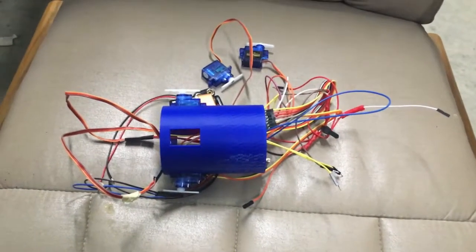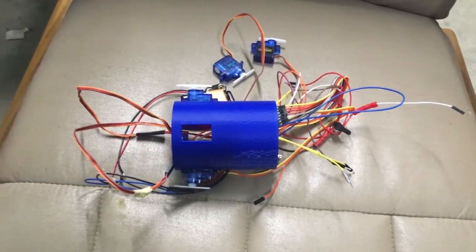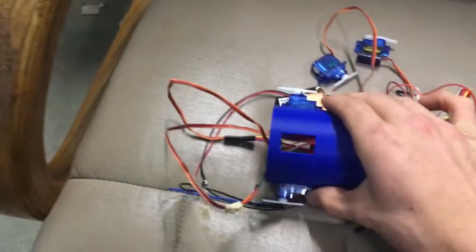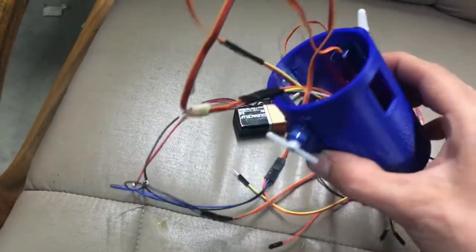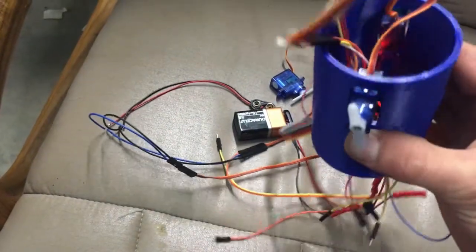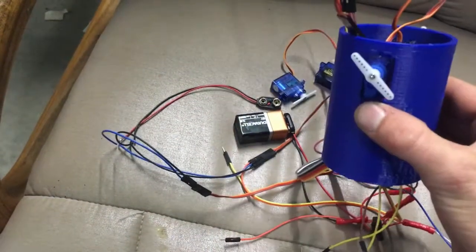This right here is a rocket stabilization system. It's going to have four servos eventually, but as of right now only two are hooked up. You can see that when it moves, servos kind of move with it.